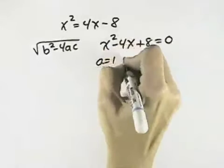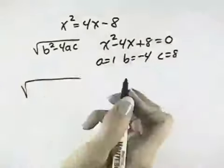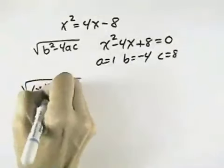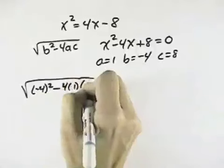a is 1, b is negative 4, and c is 8. So I can calculate the discriminant as negative 4 squared minus 4 times 1 times 8.